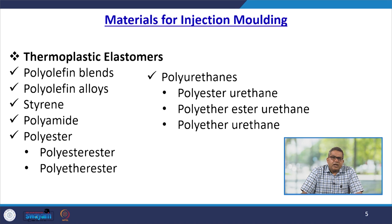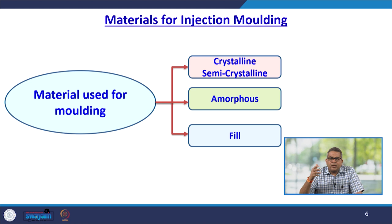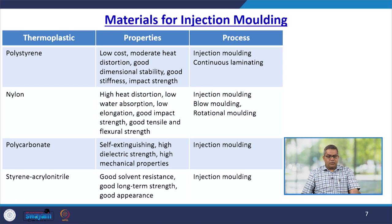There are also thermoplastic elastomers like polyolefin blends, polyolefin alloys, styrene, polyamides, polyesters, polyetheresters, and polyether urethanes — all of which can be used in the injection moulding process. When discussing materials used for moulding, we can further subdivide them into crystalline, semi-crystalline, amorphous, and filled categories.